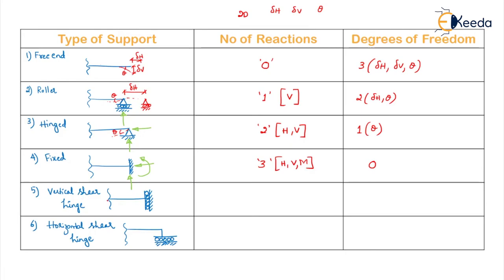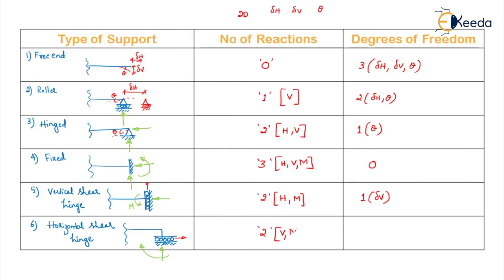For a vertical shear hinge, horizontal movement is restricted along with moment, but it is free to move vertically. So it has two reactions (horizontal and moment) and one degree of freedom (delta V). For a horizontal shear hinge, vertical movement and moment are restricted, but it is free to move horizontally. It also has two reactions (V and M) and one degree of freedom (delta H).